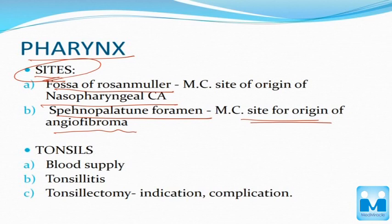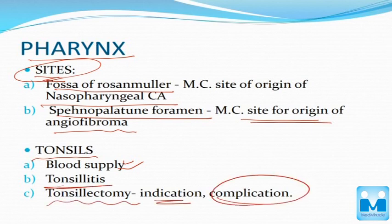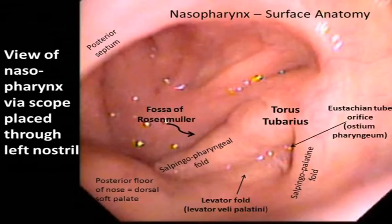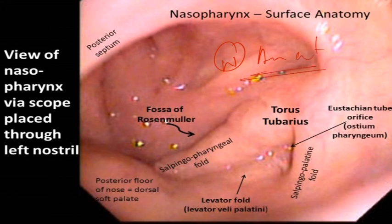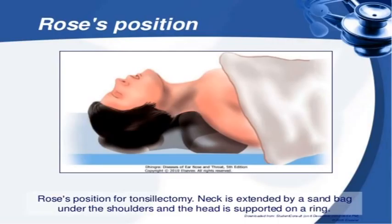The next important topic is the tonsils. You have to know the blood supply and tonsillitis, and you have to know the tonsillectomy indications and complications of the surgery. An endoscopic image can also be asked from this topic — so you have to know the normal anatomy and where all structures lie. This is the Rose position. Tonsillectomy is an important topic — you have to read about it.